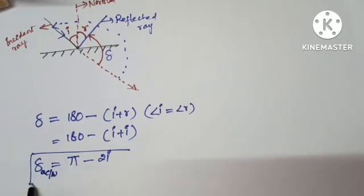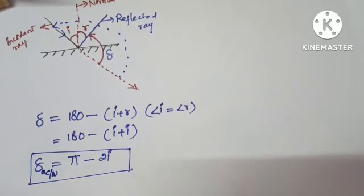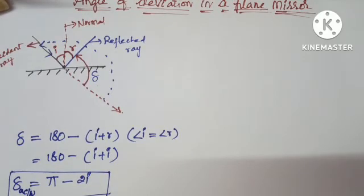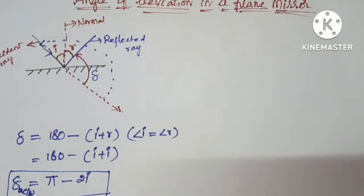This is the angle of deviation in anti-clockwise direction. That means we can calculate the angle of deviation in clockwise direction also. For that, again consider the plane mirror.